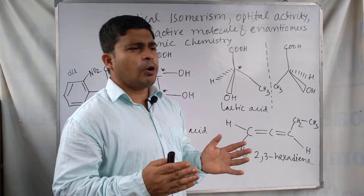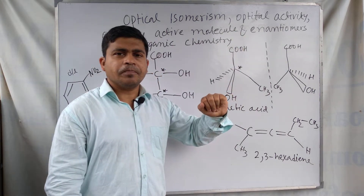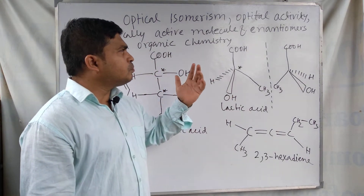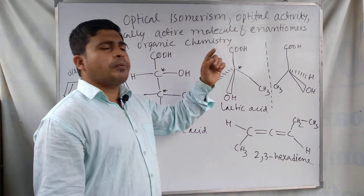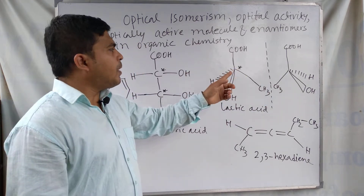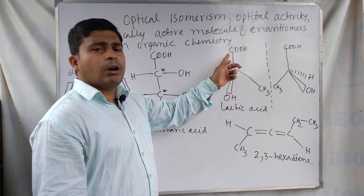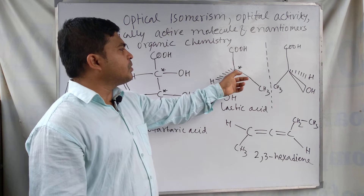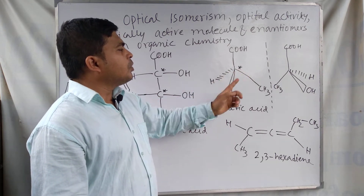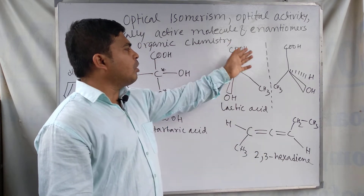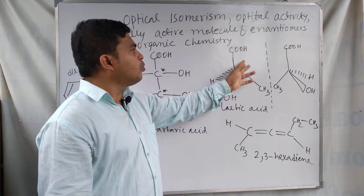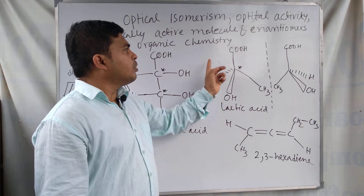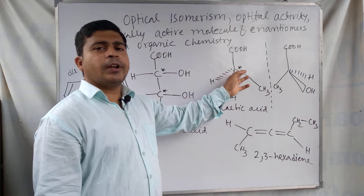For optical isomerism, the compound must be optically active. The main condition for an organic molecule to be optically active is that a carbon in the compound must be attached to four different groups of atoms. This carbon is called the chiral carbon, denoted by an asterisk (*C). When one central carbon of a molecule is attached to four different groups of atoms, that center is called the chiral center, and the compound is called an optically active molecule.